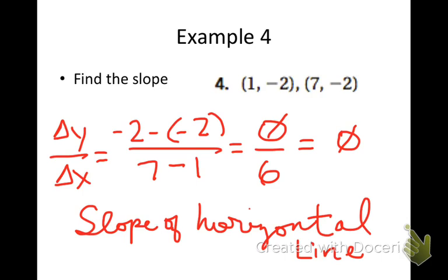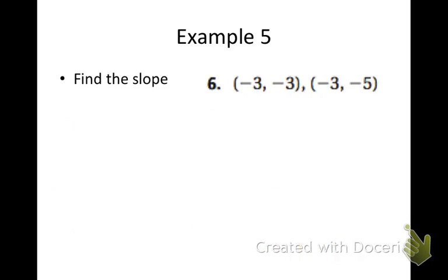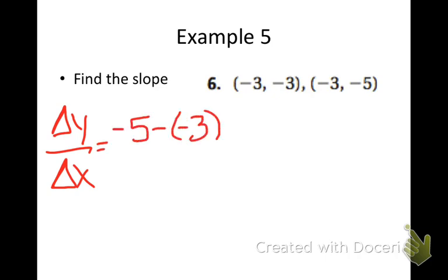So the slope of a horizontal line has a slope of 0. Given another ordered pair, change in y over the change in x, negative 5 minus negative 3 over negative 3 minus negative 3. A negative 5 minus a negative 3 is negative 2. Negative 3 minus a negative 3 is negative 3 plus 3 or 0.